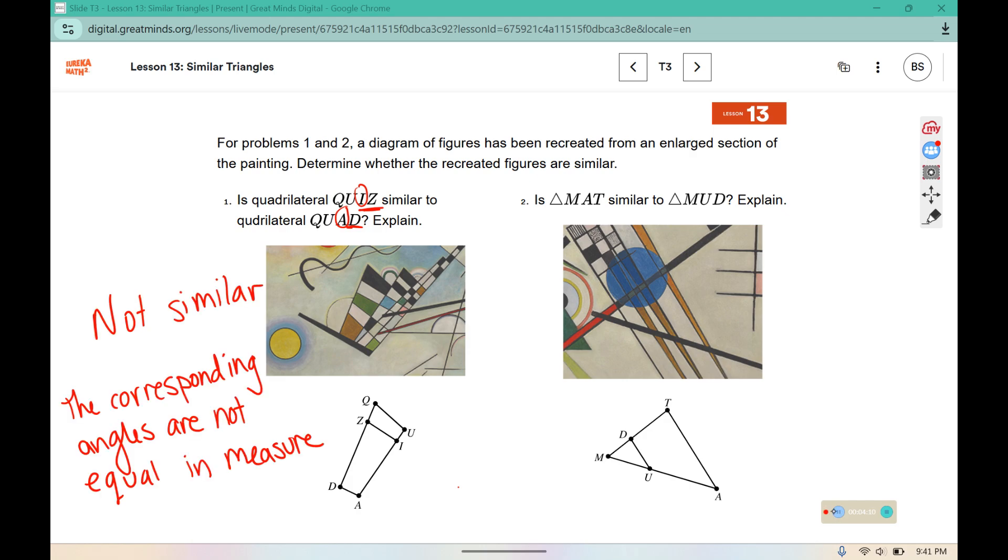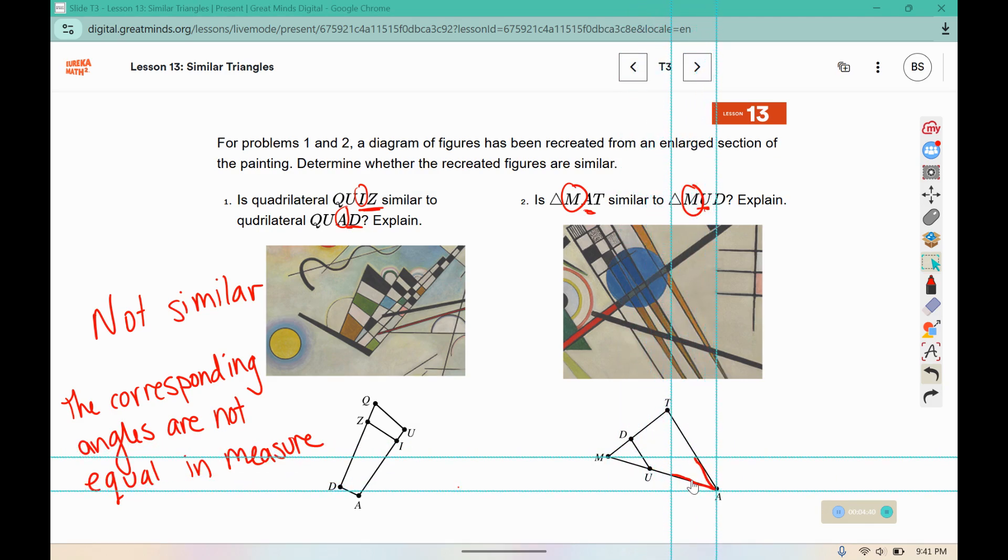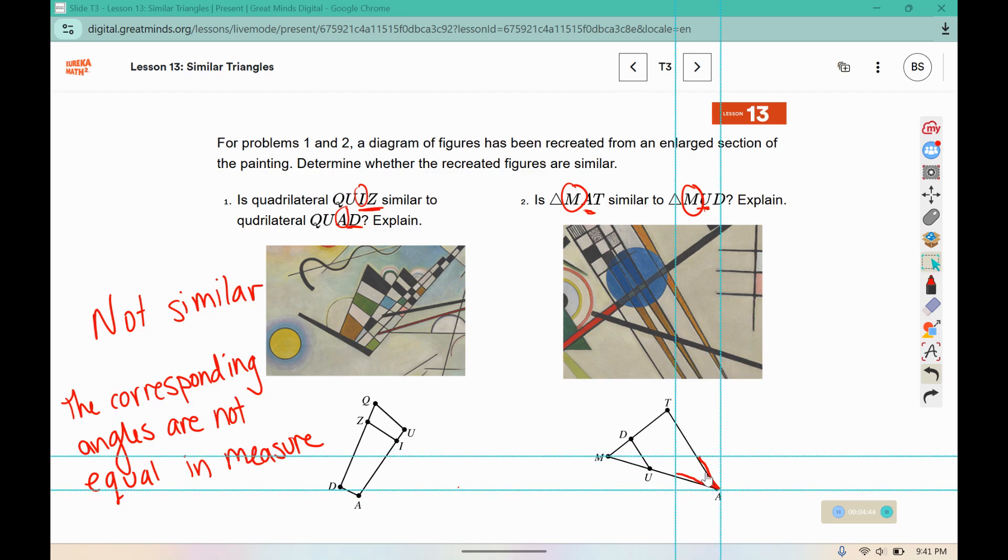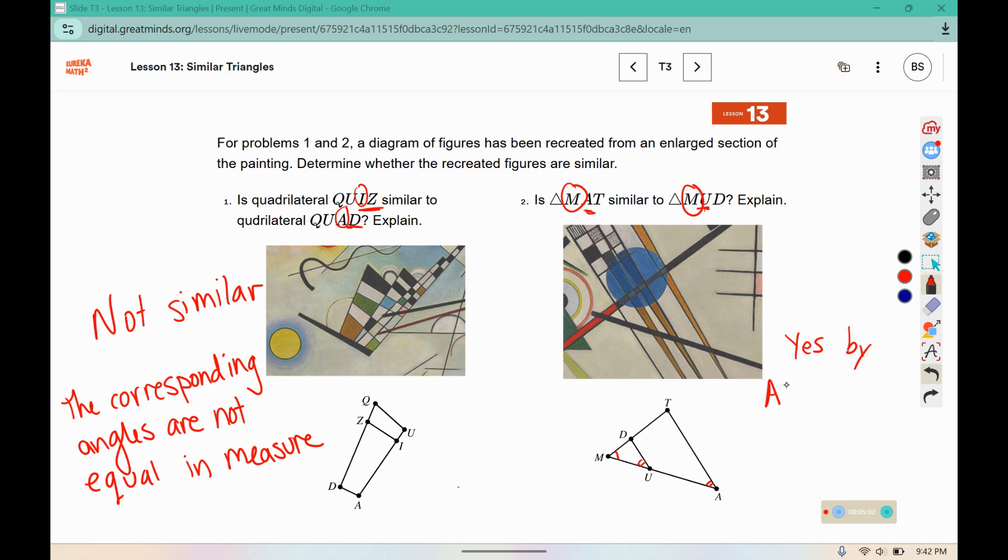For triangles, MAT, is that similar to triangle MUD? Well, we know that M and angle M are the same because those are lined up in the exact same spot. But we can check and see if A and U have the same angle measure. So I'm going to slide angle U all the way over to angle A to see if they are the same measure. So I'm going to translate it along that line and you can see here that they are in fact the same size. So yes, these figures are similar by AA criterion. M matches up with M and U matches up with A. So yes, they are similar by AA criterion.